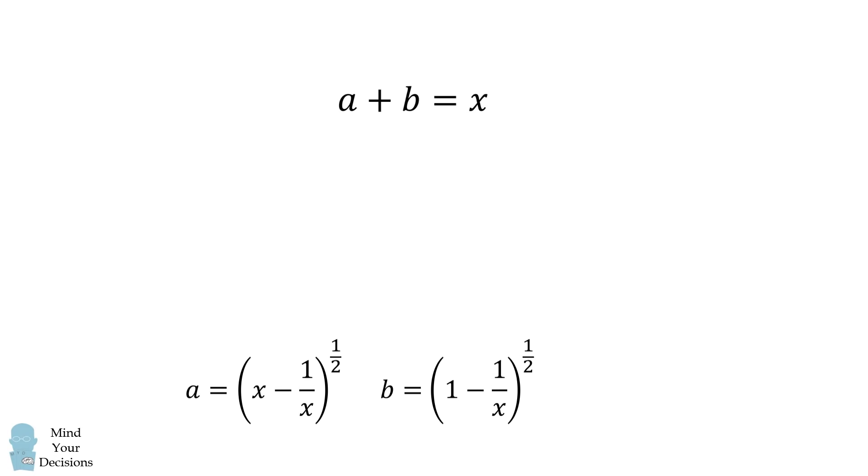We will multiply both sides of this equation by the quantity a minus b. The left-hand side of the equation will then simplify to be a difference of squares. a squared minus b squared is equal to x multiplied by the quantity a minus b.